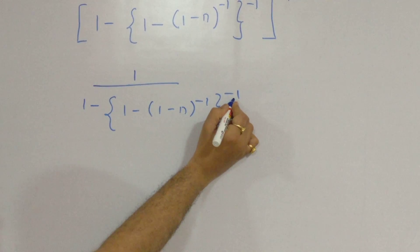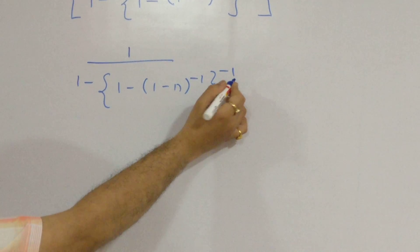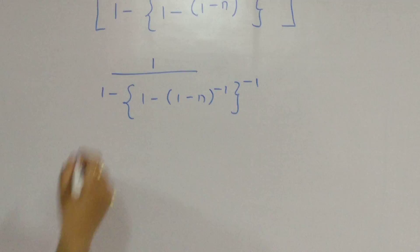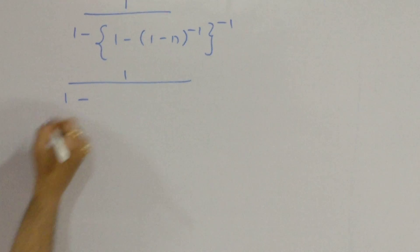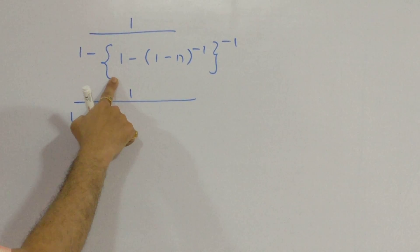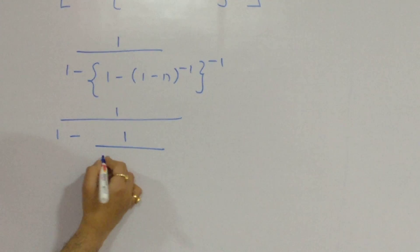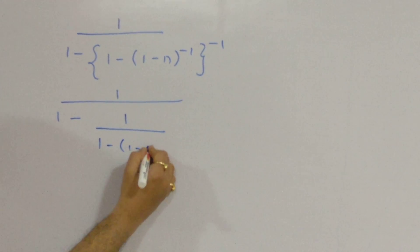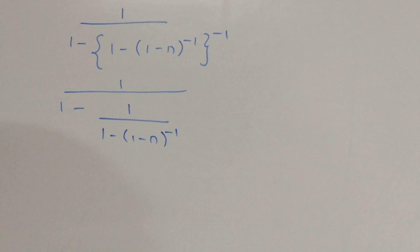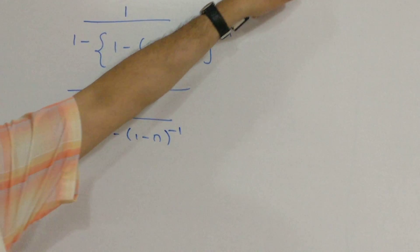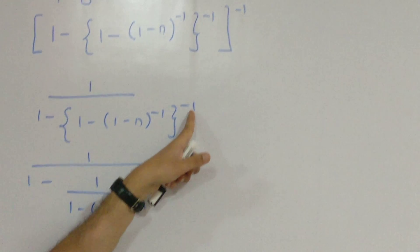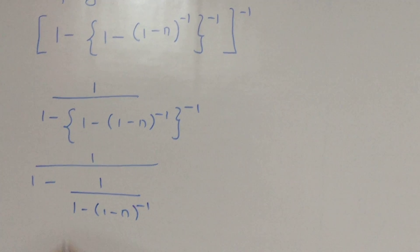Now, we further need to pay attention to this particular minus 1. Again, the same law is going to get applied over here. 1 upon 1 minus. Now this curly brackets won't be there. This curly brackets are going to get off and we will get 1 upon. 1 upon inside. 1 minus 1 minus n raised to minus 1. So first, we got rid of this minus 1. Now, we got rid of this minus 1.